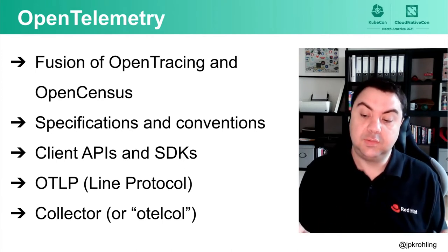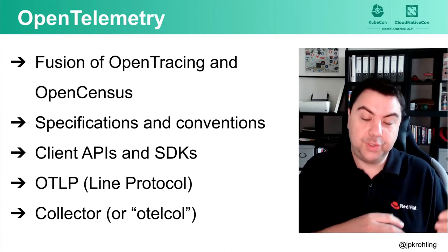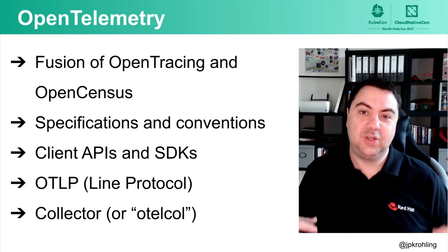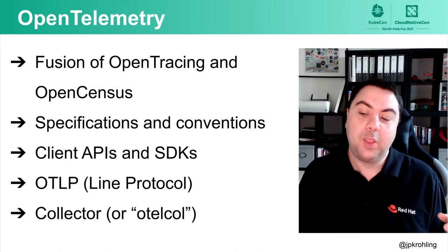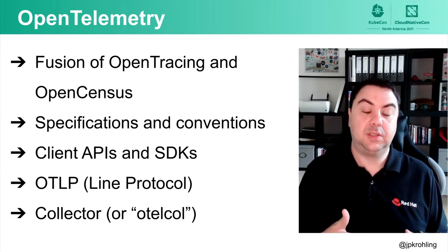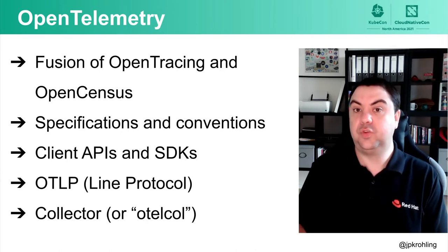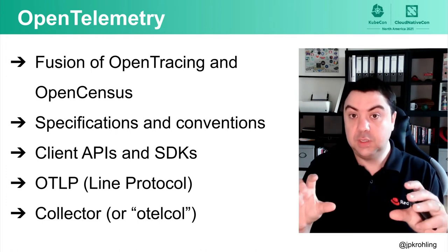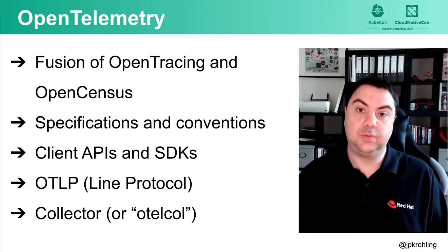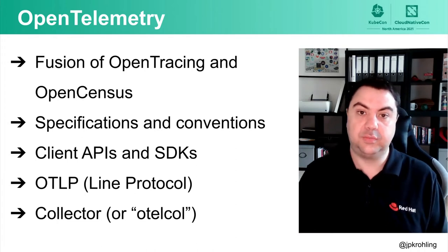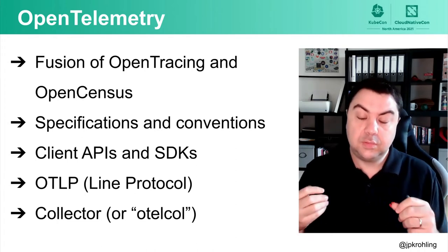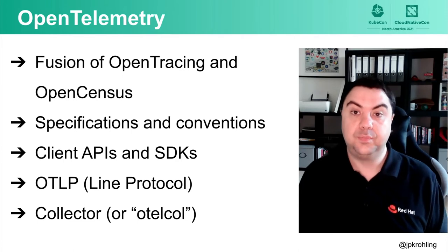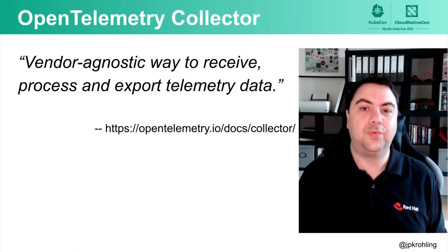OTLP stands for OpenTelemetry Line Protocol. In concrete terms, it is essentially a protobuf-based specification on how we can transmit telemetry data from one service to another. It specifies both the message format and how services should look on the client and server side. The fourth big part of OpenTelemetry is the collector, which is where we are focusing today.